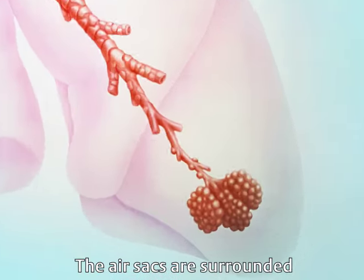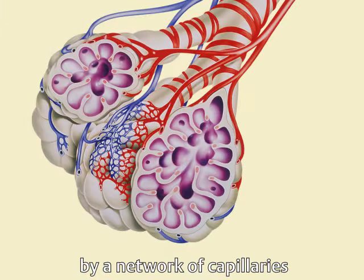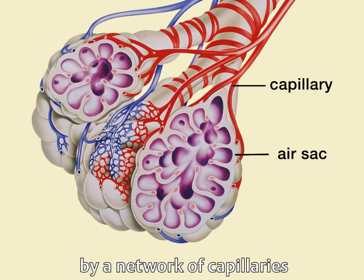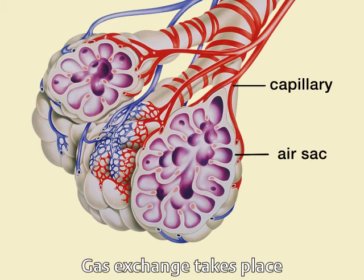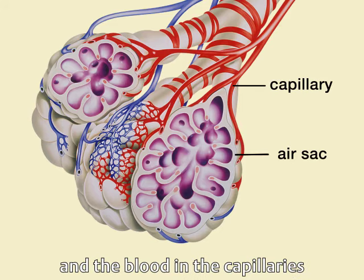The air sacs are surrounded by a network of capillaries. Gas exchange takes place between the air in the air sacs and the blood in the capillaries.